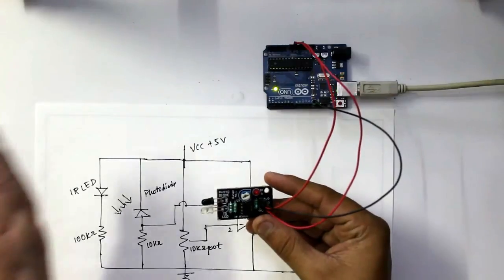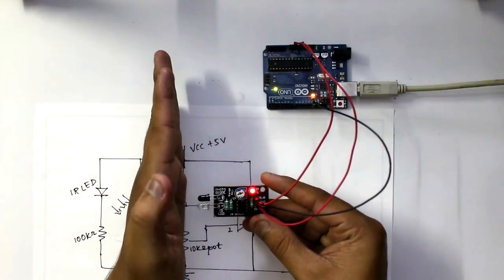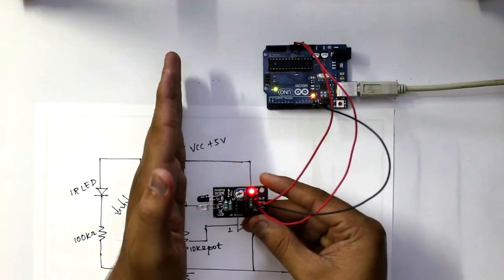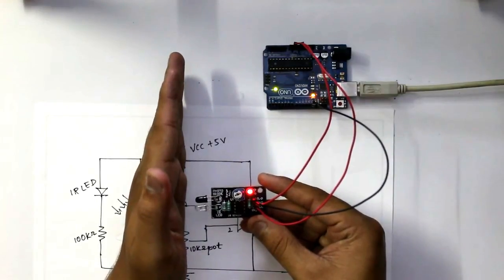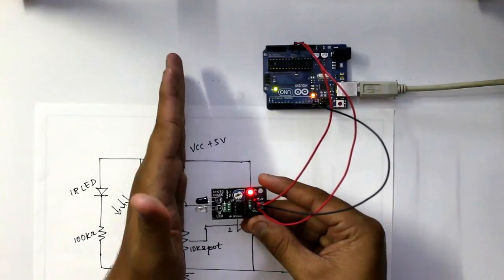Now if I bring my hand close to this, as you can see the LED is now glowing, which indicates that photodiode is detecting the IR radiations emitted by the LED because it is reflected back to the photodiode.